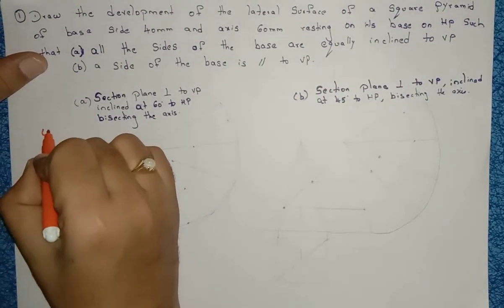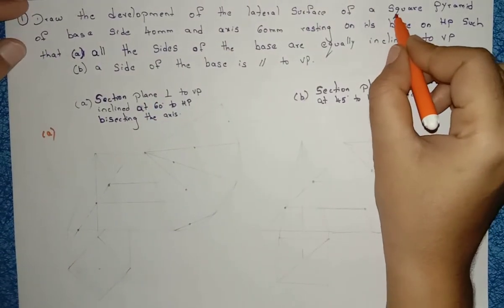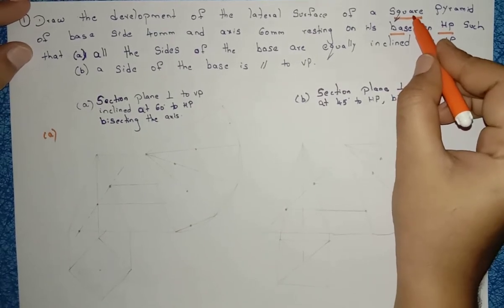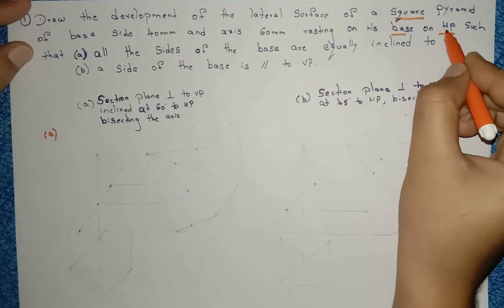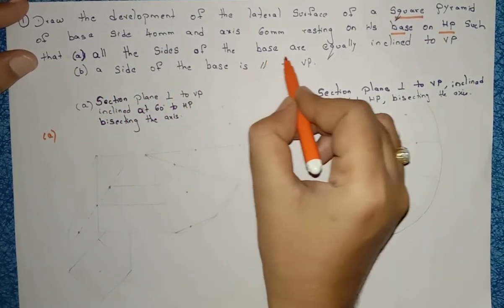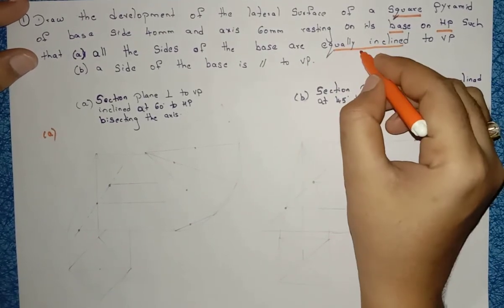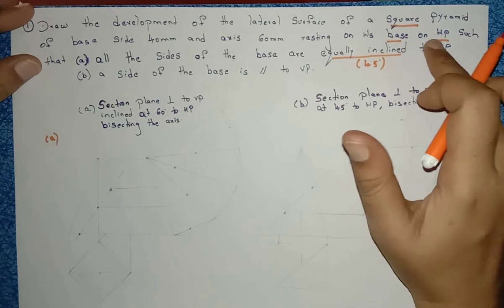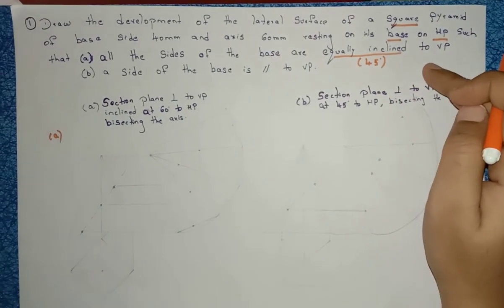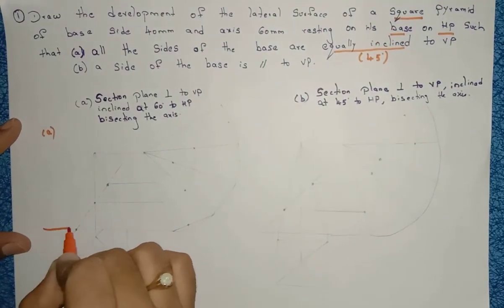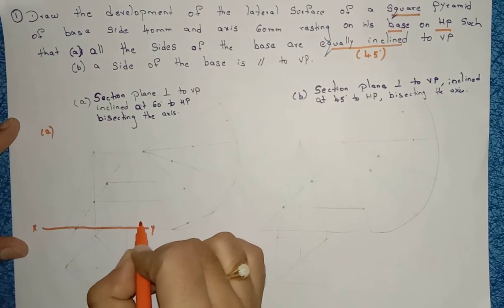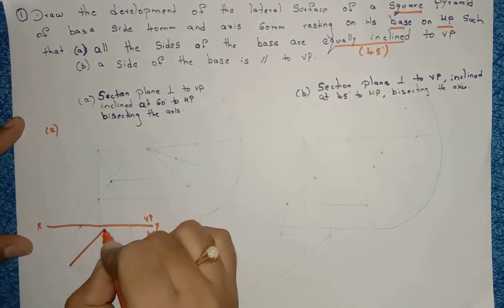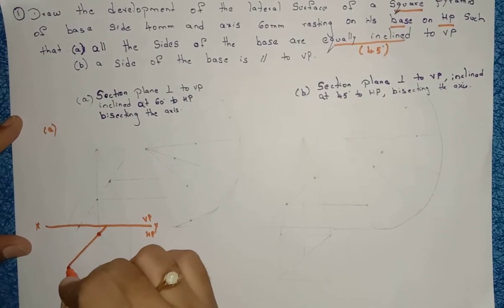Now we will see part A. The condition is all the sides of the base are equally inclined to VP — that means the angle is 45 degrees. You have to construct the square base on HP. First, draw the reference line and name it as XY, VP, HP. Since equally inclined means 45 degrees, take a 45-degree angle, leave a 5 mm gap, and construct the square.